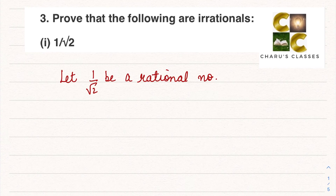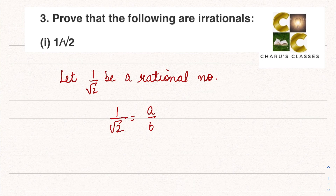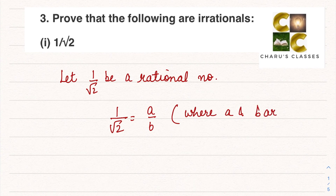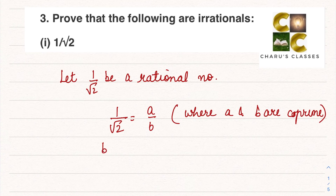If 1 by root 2 is a rational number, then I can write 1 by root 2 in the form of a by b, where b is not equal to 0, and a and b are co-prime. Cross multiplying, b is equal to root 2 times a, or we can say b by a is equal to root 2.